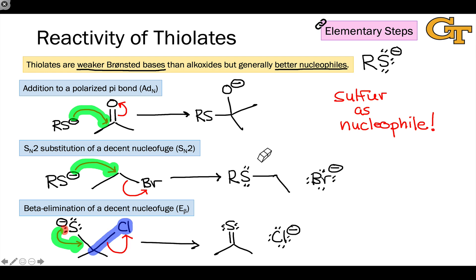For example, the amino acid cysteine, which has a thiol in its side chain, is a key nucleophile in a number of biochemical reactions, and we'll see it in action many times when we look at enzyme-catalyzed mechanisms later in the semester.